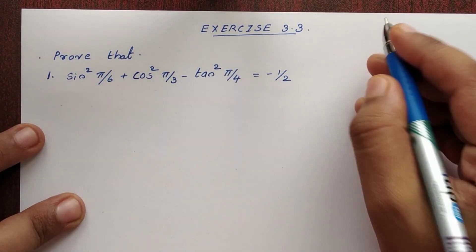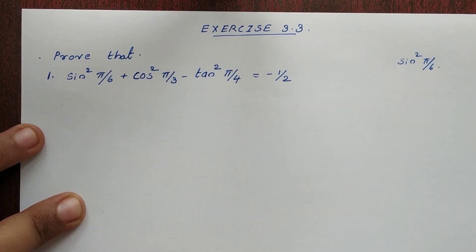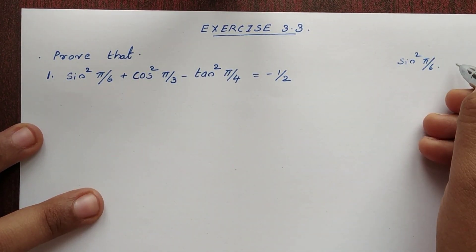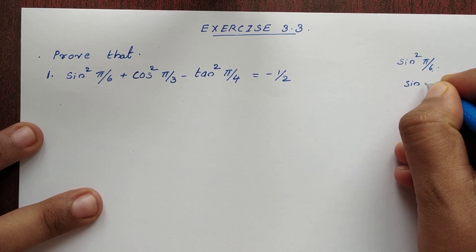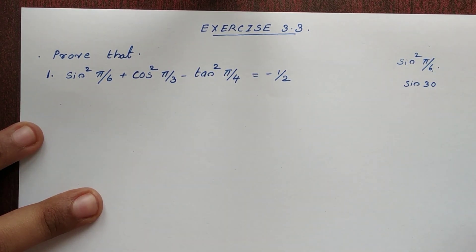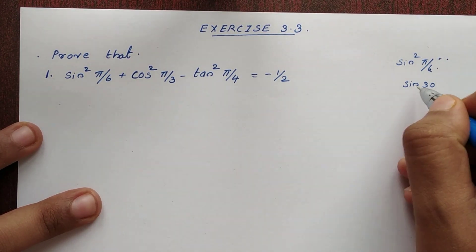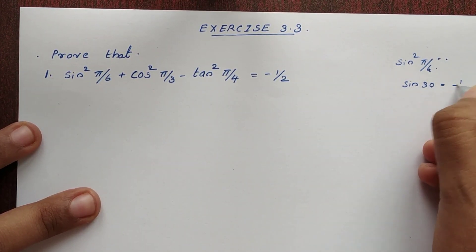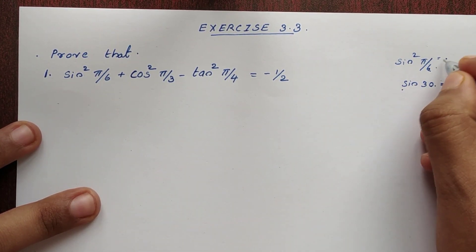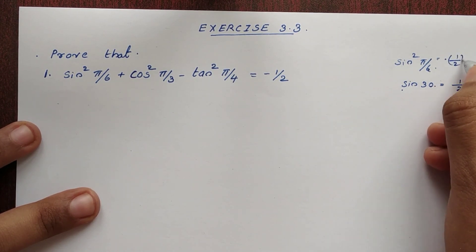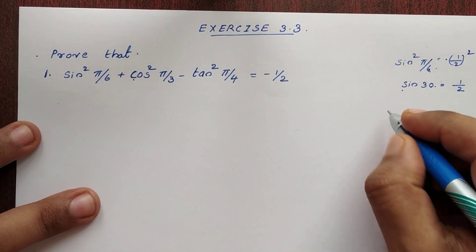Let's look at sin²(π/6). π by 6 is 30 degrees. sin 30 value is 1 by 2. So sin²(π/6) equals 1 by 2 squared, which equals 1 by 4.